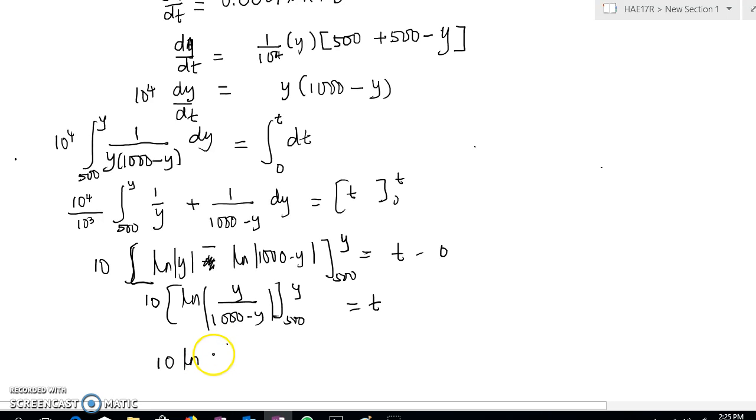We have this term. Minus ln, this will be 500, 500. 500/500 is 1, so ln 1 is actually 0.